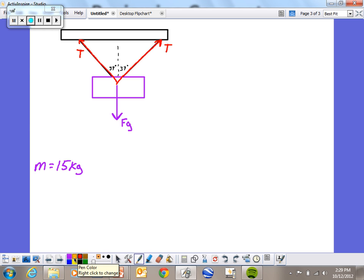From here, the next step is always coming up with our positives and negatives. I'm going to say up is positive, right positive, down negative, left negative.